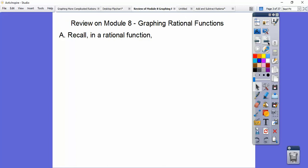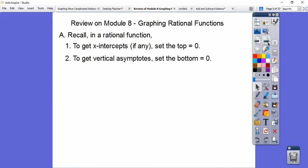So in a rational function, which just means a fractional polynomial function, to get your x-intercepts or your zeros, you set your top equal to zero. That's how we get the zeros or the x-intercepts. To get our vertical asymptotes, we set the bottom, the denominator, equal to zero.